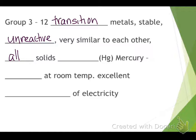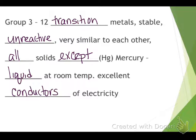Groups three through twelve are your transition metals. They're stable, they're unreactive, they're very similar to each other. They're all solids except, like everything in science, there's always an exception: mercury. It's a liquid at room temperature. All of these transition metals are good conductors of electricity and heat. These are the metals that you probably know the most: copper, zinc, tin, aluminum, silver, gold. They're all right here in this section.